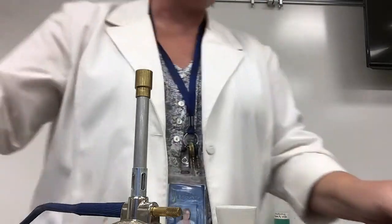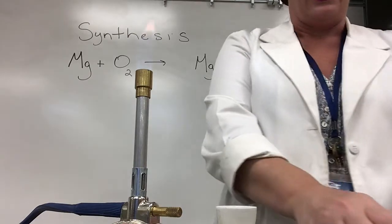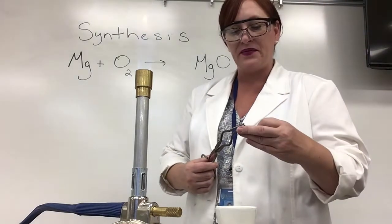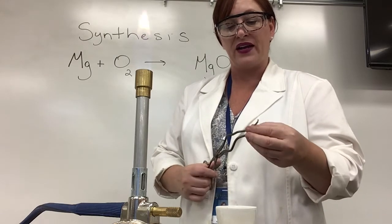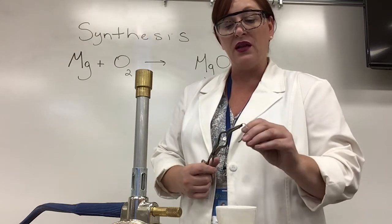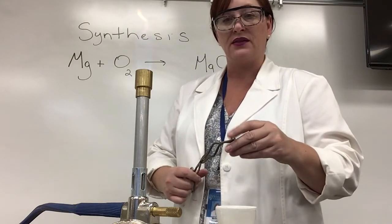So let's turn on our burner and we're gonna hold our magnesium into the flame. It's actually gonna flash kind of a bright white color and I don't want to look at it. So it's gonna kind of give me spots.